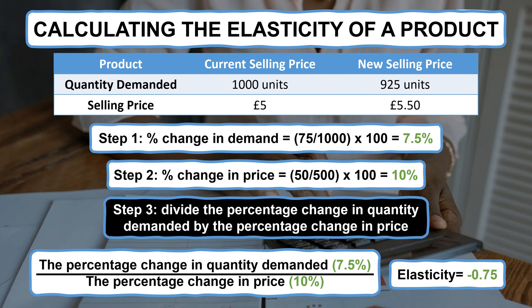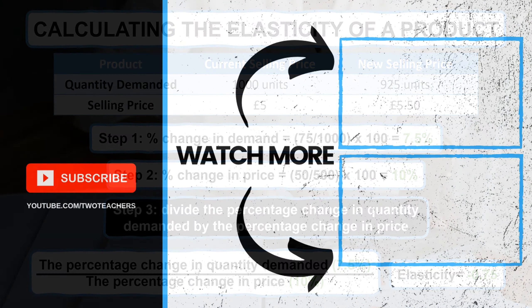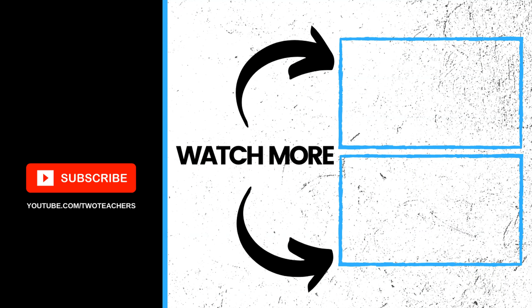This means it would be a good business decision to increase the selling price of the burger to £5.50, as total sales revenue is likely to increase, even though the business will lose a small percentage of its customer base for this particular product. So that's it — price elasticity of demand explained, a very useful calculation which supports businesses in making decisions about the selling prices of their products and the potential impact on demand and total sales revenue.